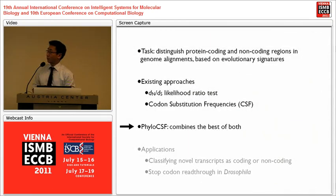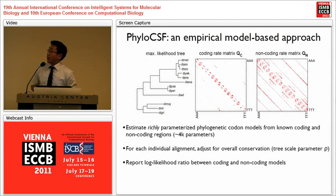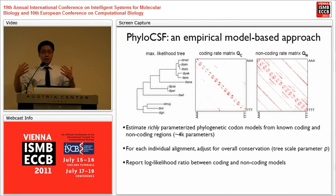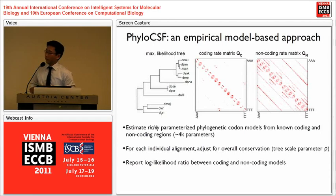We are presenting a new method called Phylo-CSF, where CSF stands for codon substitution frequencies. It captures the key idea of using a richly parameterized empirical model from CSF within the context of a model-based generative approach. In Phylo-CSF, we have a phylogenetic tree with branch lengths estimated by maximum likelihood, and we estimate two empirical rate matrices from training data of known coding and non-coding regions. With about 4,000 parameters, essentially every individual rate in the coding matrix and similarly in the non-coding matrix is estimated from training data using an expectation-maximization approach that reconstructs ancestral events and refits parameters under uncertainty.